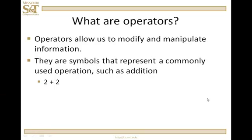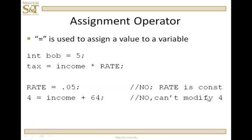So, let's begin by looking at assignment. We use the equal sign for assignment. We have four examples here. You've seen these before in declarations. We have int bob equals five, so we're assigning five to the memory location named bob as an initial value. In the second example here, we have a typical assignment, tax equals income times rate.